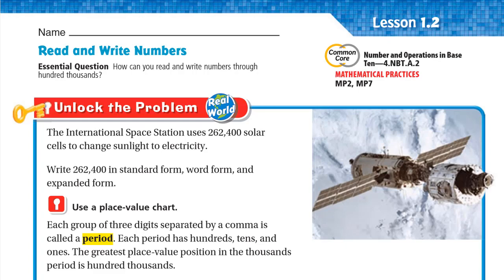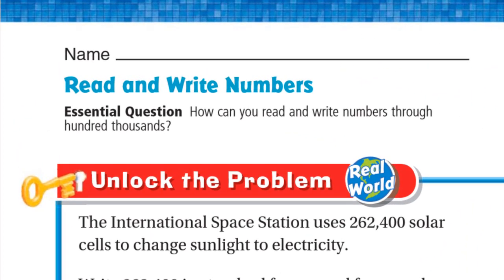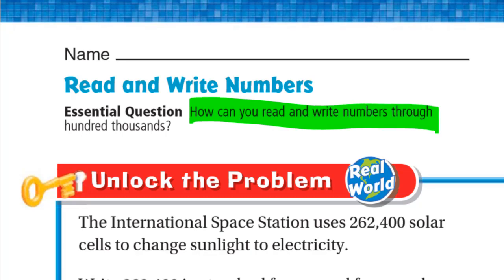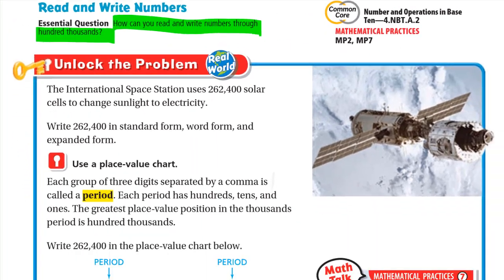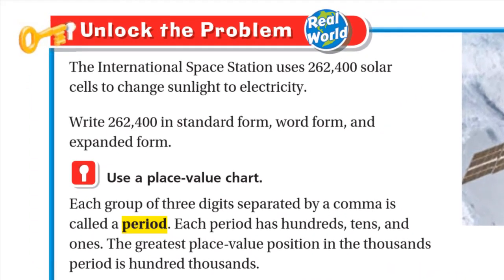Hello, this is Mr. Ahmad and today we'll do lesson 1.2: Read and Write Numbers. Our essential question is: how can you read and write numbers through hundred thousands? Let's unlock the problem — the International Space Station uses 262,400 solar cells to change sunlight to electricity.